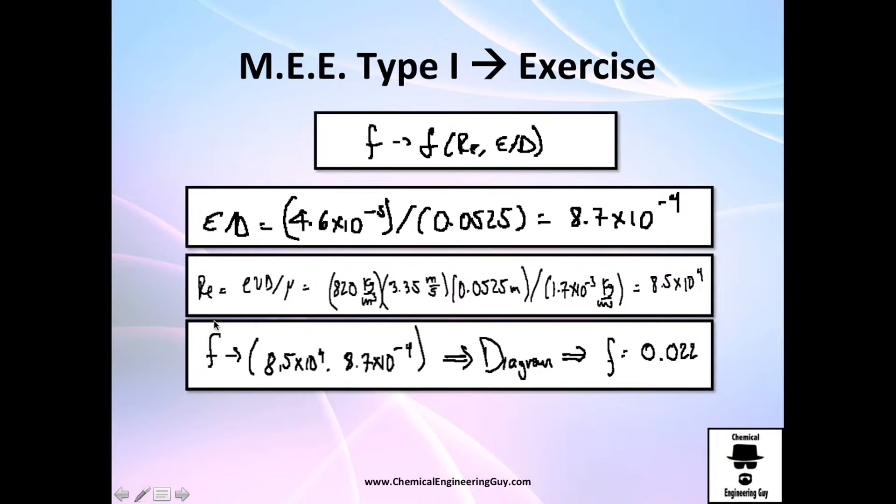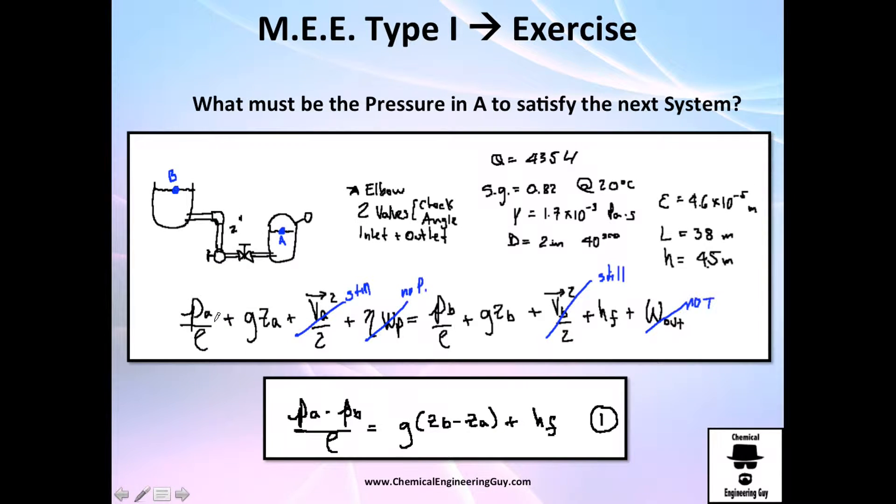Let's do the balance with the mechanical energy equation. You can see that PA and PB are different so I cannot cancel those. There is a change in height so I cannot cancel that. The velocity in A and velocity in B I can cancel them because they are equal to zero. There's no pump so I'm going to take it away. There's no turbine, I'm going to take it away.